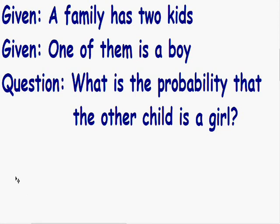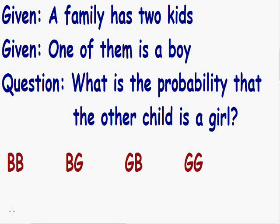So we were given that the family has two kids. The first thing I'm going to do is list out all the different combinations for a family that has two kids, and I'm going to label all these combinations 1 through 4.